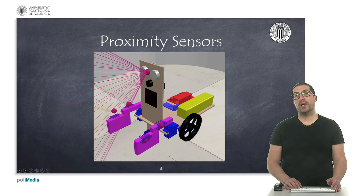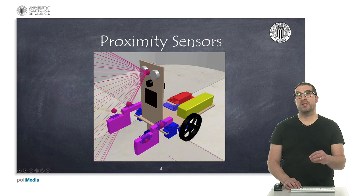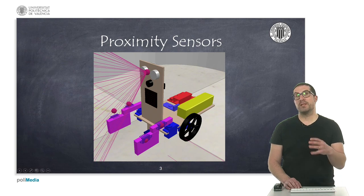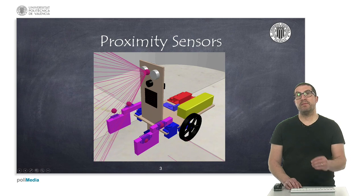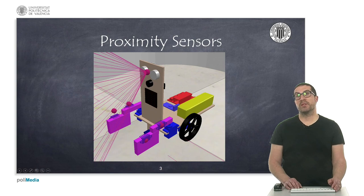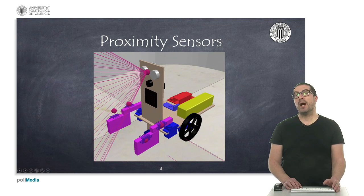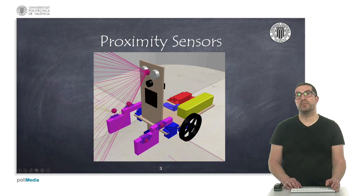We will include an object as an imported geometry from an STL file, which you can download with the link provided in the video description. This is simply the aspect of the sensor. For each object, we will add a ray-type proximity sensor. The configuration parameters are quite simple: we have five centimeters offset and the maximum detection distance, according to the manufacturer, is 1.2 meters.